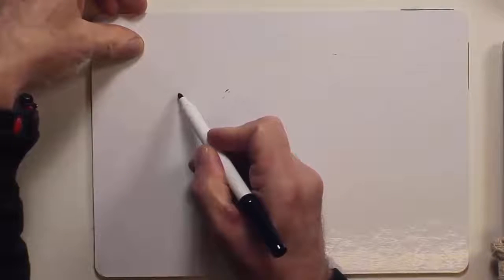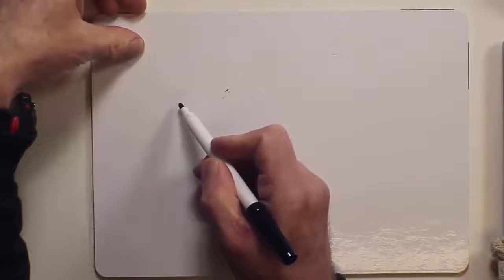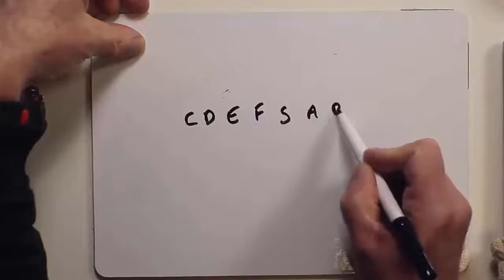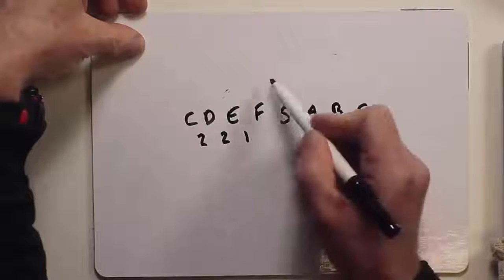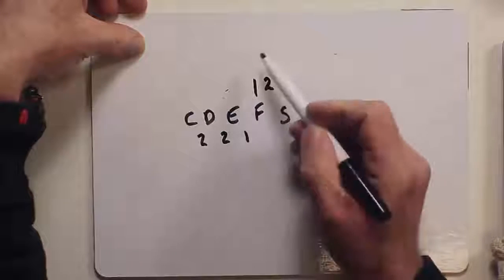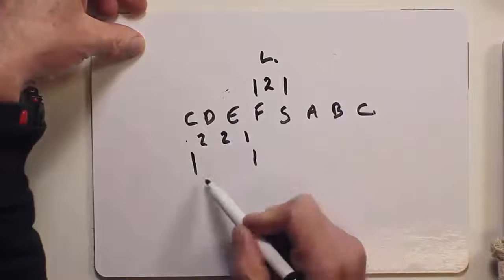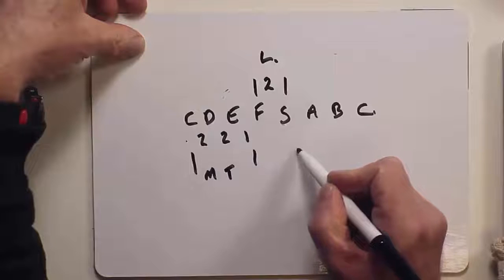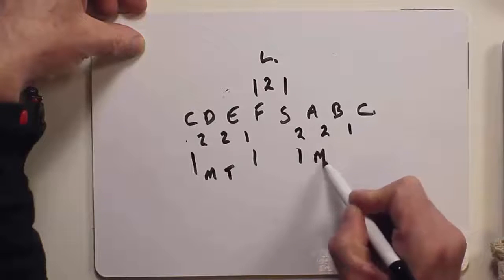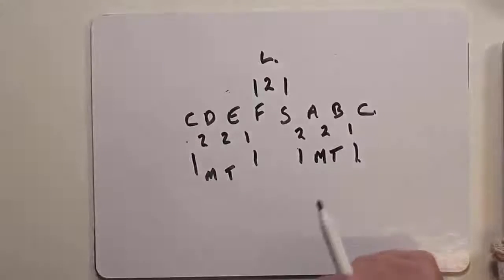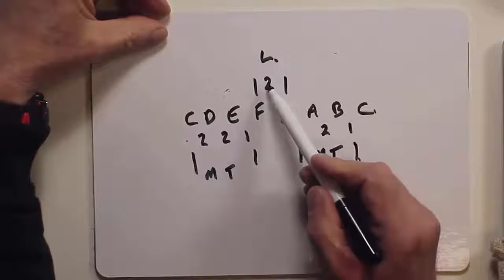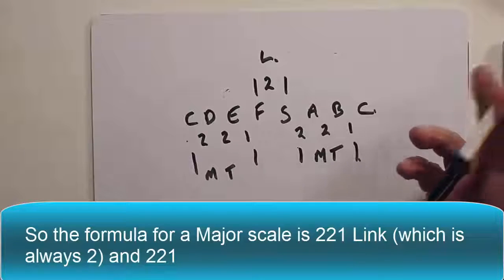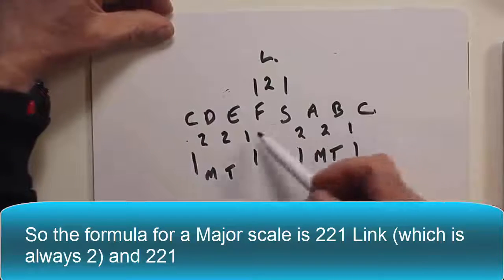So this is a major scale, or what the Greeks called an Ionian mode. C, D, E, F, G, A, B, C. You've got 2-2-1 pattern there. You've got this link. A link is 2. A link is always 2. See, this pattern here is a major tetrachord. And then you've got a link of 2. Then you've got another 2-2-1 pattern, which is also a major tetrachord. So you've got 2-2-1, a link that's 2, two half tones, that is, and then another one 2-2-1. So to construct a major scale, it's 2-2-1 link 2-2-1. So it's quite easy.